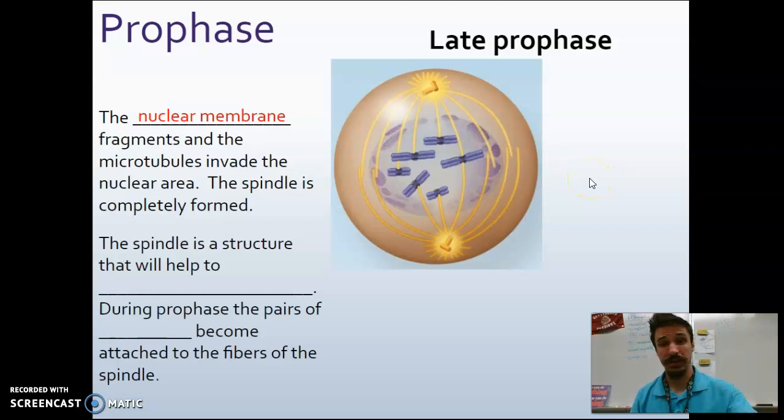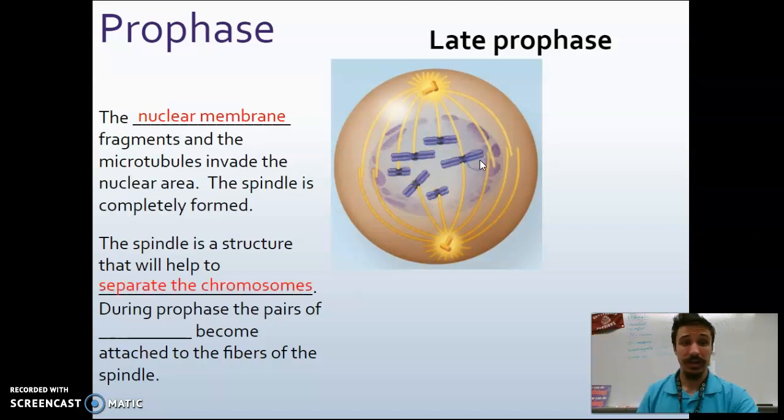So the spindle structures, these yellowish arms coming from the centrioles, and you can see they're connecting to the centromeres of the chromosomes, they're going to help to separate the chromosomes during the actual division event, again making sure that each cell has the appropriate number. So during prophase, the pairs of chromatids become attached to these spindle fibers, these microtubule protein structures, these arms coming off the centrioles. You can call these microtubules, you can call them spindle fibers. This entire yellow structure as a whole can be called the spindle complex, whatever you want to call it.